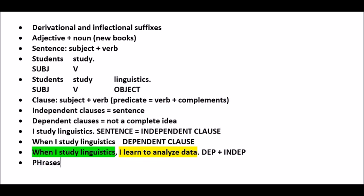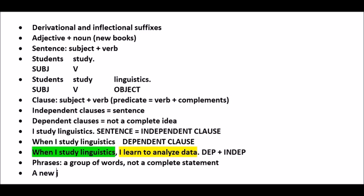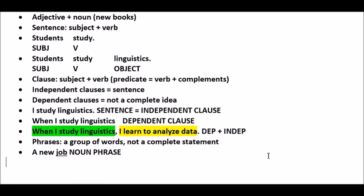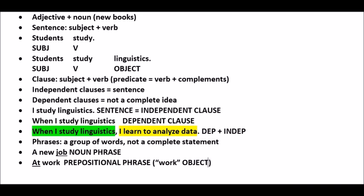Finally, let's talk about phrases. A phrase is a group of words that does not form a complete statement. There are a number of different types of phrases, but we'll just cover two. Here's a simple sample: 'a new job.' The word 'job' is the most important word in this phrase, so we call this a noun phrase. In front of that noun, you see an article and an adjective. Here's another sample: 'at work.' It does have a noun, but the most important word is the preposition 'at,' which makes this a prepositional phrase. That 'at' requires an object — in this case, 'work' is the object of the preposition.